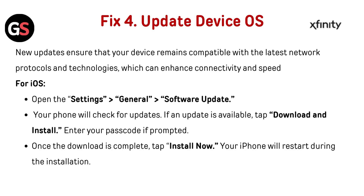Fix 4: Update your device operating system. New updates ensure your device remains compatible with the latest network protocols and technologies, which can enhance connectivity and speed. For iOS, open Settings, go to General, then Software Update. Your phone will check for updates. If an update is available, tap Download and Install, and enter your passcode if prompted.